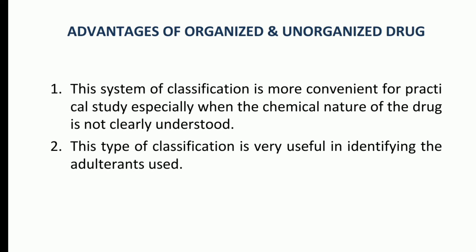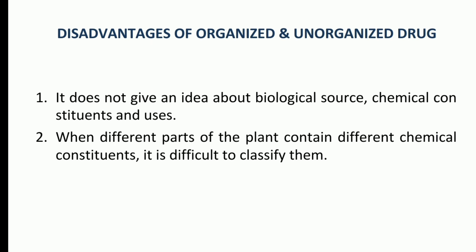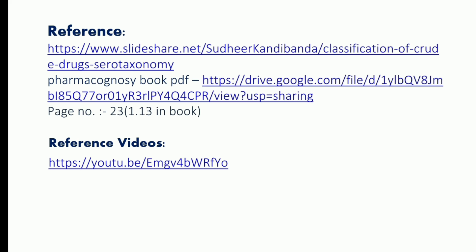The advantages of organized and unorganized drugs: it is more convenient for practical study when the chemical nature of drugs is not understood, and it helps in identifying the adulterants used in the drug. The disadvantages: it does not give any idea about the biological source, chemical constituents, and uses. When different parts of a plant contain different chemical constituents, it is difficult to classify them.